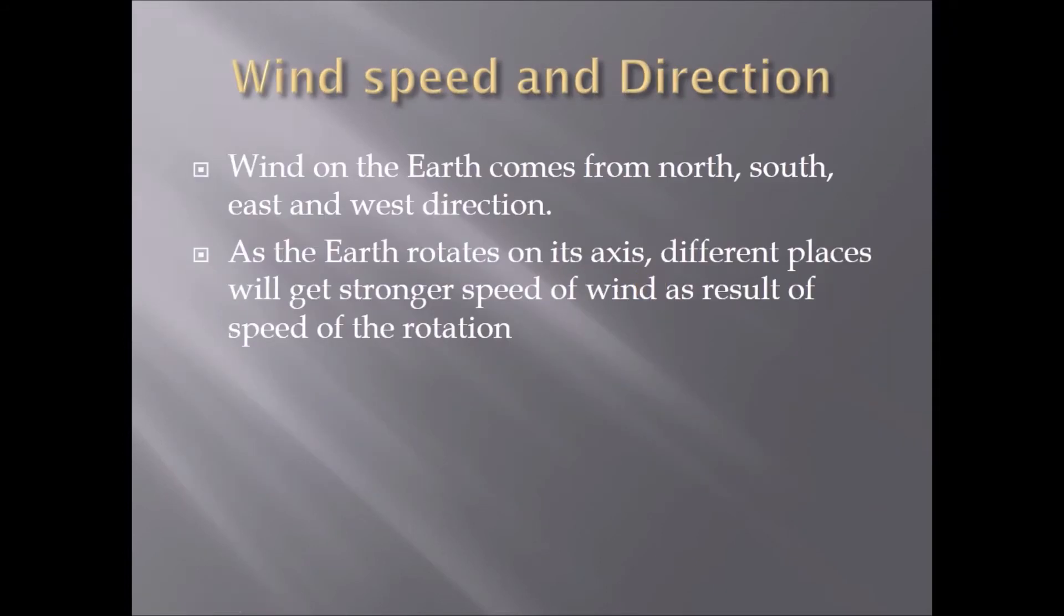The next effect of rotation is wind speed and direction. Wind on the Earth comes from north, south, east, and west directions. As the Earth rotates on its axis, different places will get stronger wind speeds as a result of the rotation.